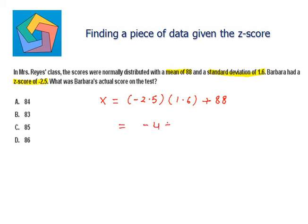So, negative 4 plus 88, which is equal to 84, which is the answer in part A.